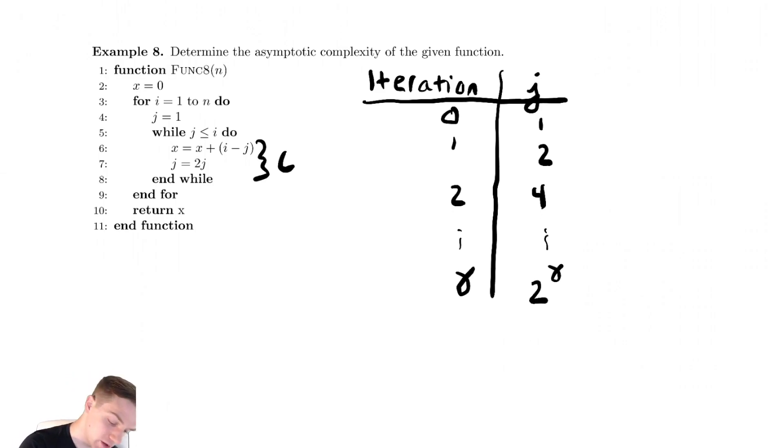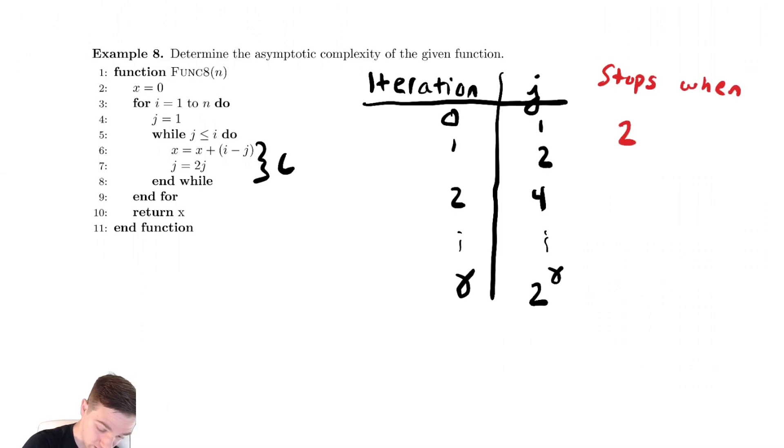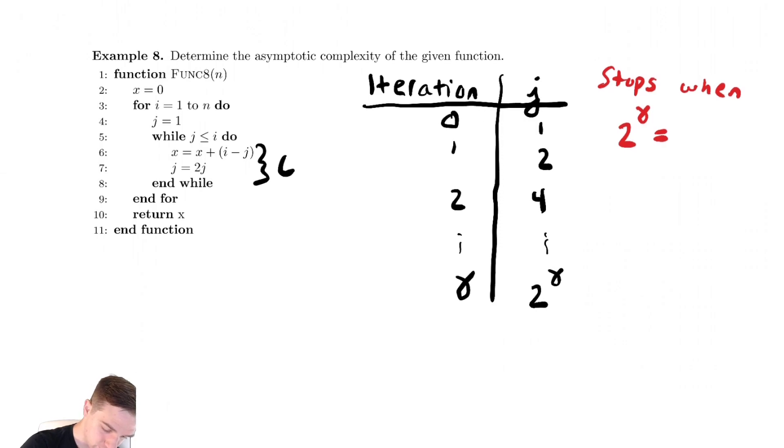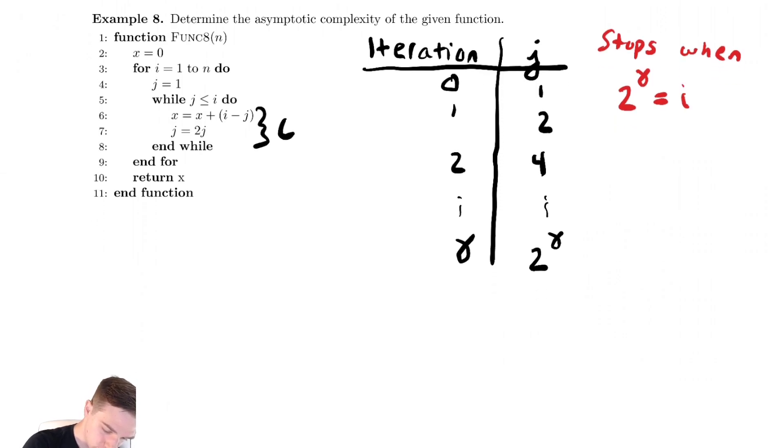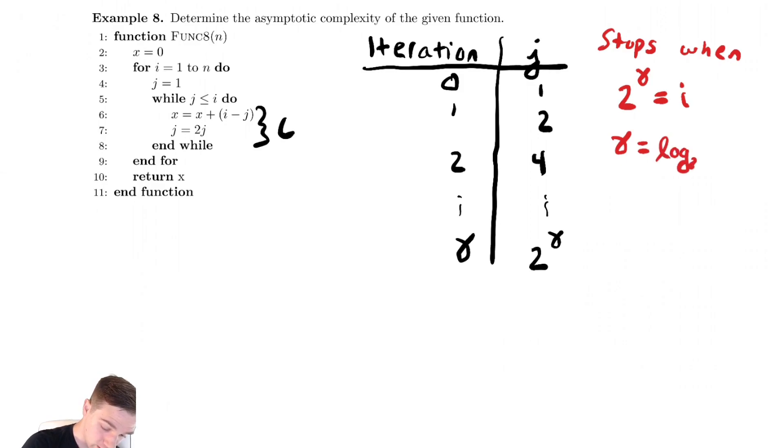When does this stop? Well, it stops when my pattern that I've noticed, which this time is 2 to the gamma, is equal to the stopping condition of the while loop, which is i. Solve that for gamma. Gamma is equal to log base 2 of i.